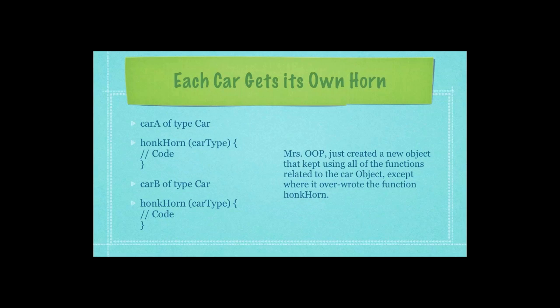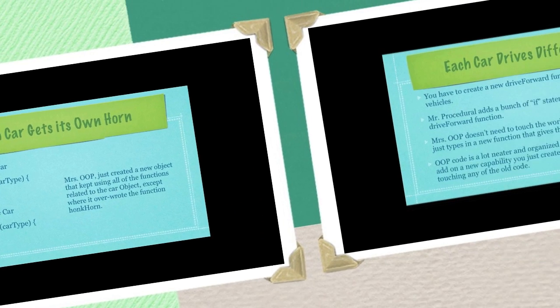If you were an object-oriented programmer, you would just simply define two new objects of the type car. What would happen is all the functions and variables you defined for your superclass car would automatically become capabilities that car A and car B could use, but in this circumstance, car A and car B are going to override the honk horn function described in the car class and honk differently.